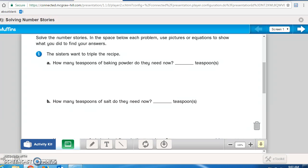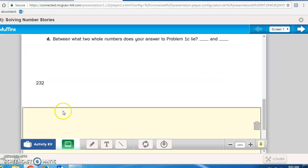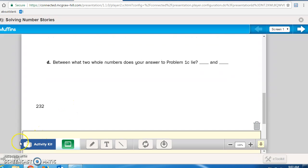The first question says, the sisters want to triple, that means three times the recipe. How many teaspoons of baking powder do they need now? So you're looking only at the baking powder and you're tripling it. Show your work underneath A and write your answer here. For B, how many teaspoons of salt do they need now? We're looking specifically at salt. Again, we're still tripling the recipe. How many cups of whole wheat flour? Triple the recipe. Answer goes here. And between what two whole numbers does your answer to problem 1C lie? Does it lie between 1 and 2, 2 and 3, 3 and 4, 4 and 5? Stop the recording now. Finish Math Journal page 232 and bring it up to me when you're finished.